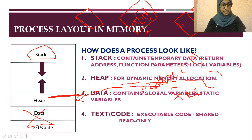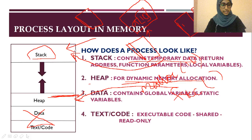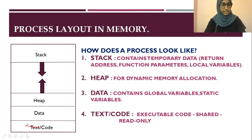The stack section contains temporary data such as return addresses, function parameters, and local variables. While global and static variables are stored in the data section, local variables — those declared inside a function with scope limited to that function — are stored in the stack.